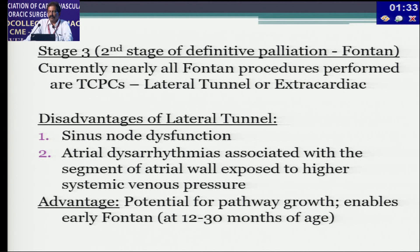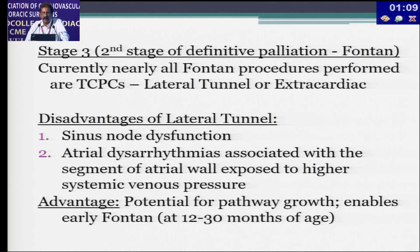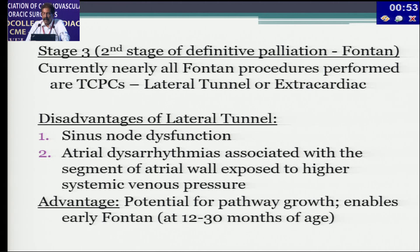Stage three is the second stage of definitive palliation. Currently, nearly all Fontan procedures are performed as TCPCs — either lateral tunnel or extracardiac. The disadvantage of the lateral tunnel is involvement of right atrial wall exposed to higher systemic venous pressure, which can cause sinus node dysfunction and atrial dysarrhythmia — harmful to hemodynamics. Its only advantage is a potential pathway for growth, enabling earlier Fontan. For extracardiac Fontan, you must wait until you can place at least a 20 mm tube graft, as the adult IVC size is 23 mm.